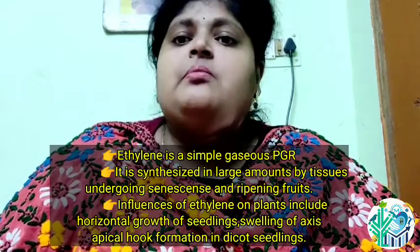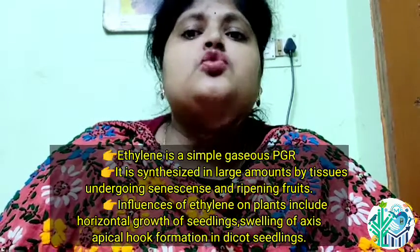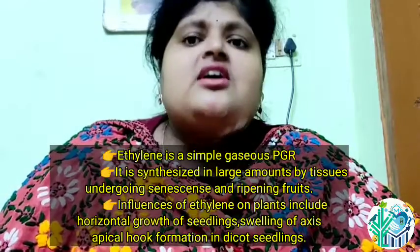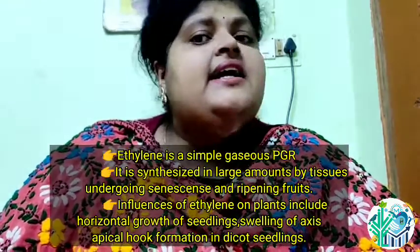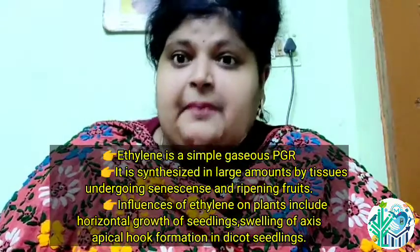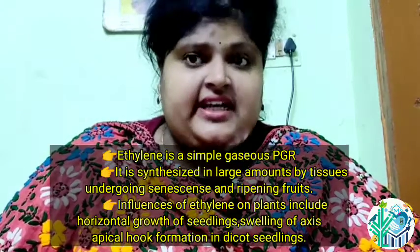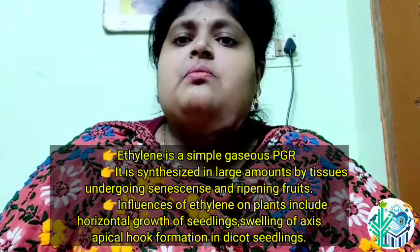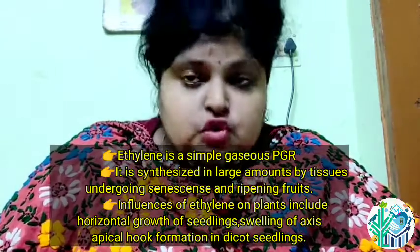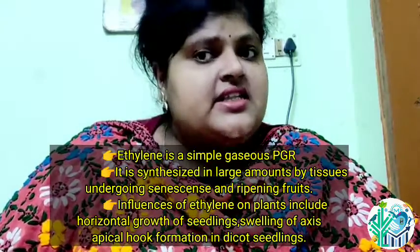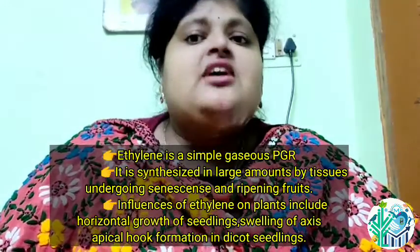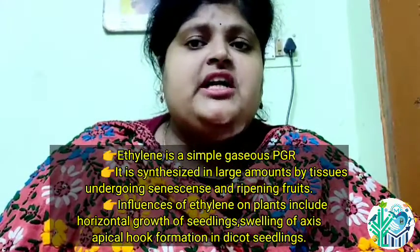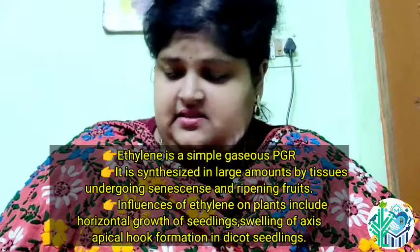Influences of ethylene on plants include horizontal growth of seedlings, swelling of the axis, and apical hook formation in dicot seedlings.